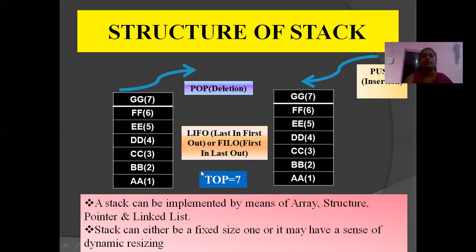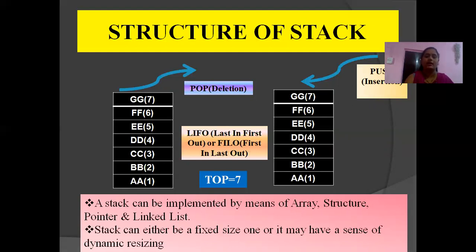Here I have defined the value of top as equal to 7. How? In this stack, how many elements are there? 1, 2, 3, 4, 5, 6, and 7. So the number of elements stored in the Stack is the value of top. In another way, you can say top is nothing but the maximum value of the Stack. Stack can be implemented as an array, structure pointer, and linked list.